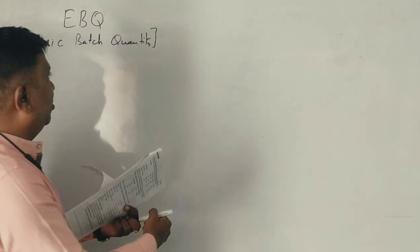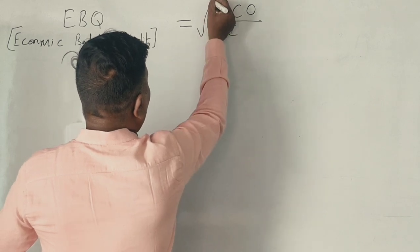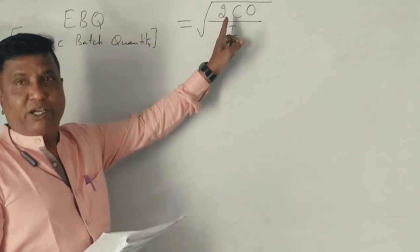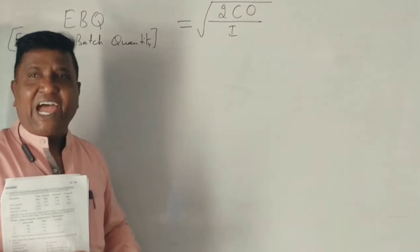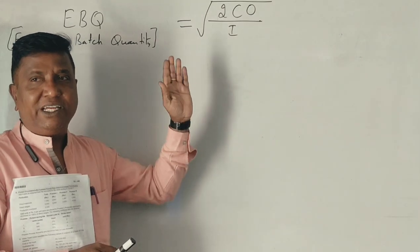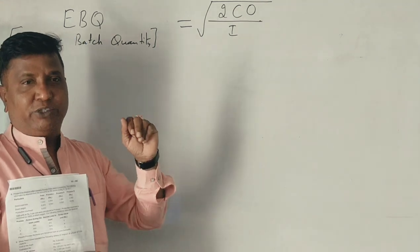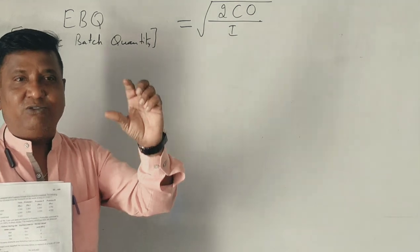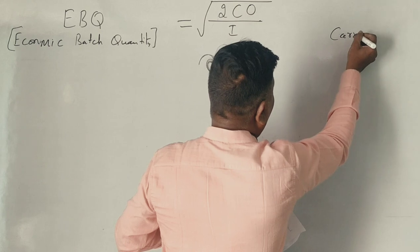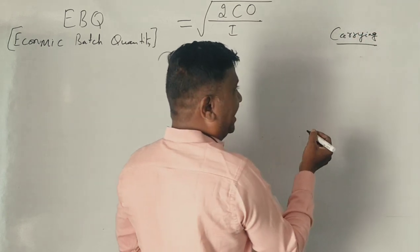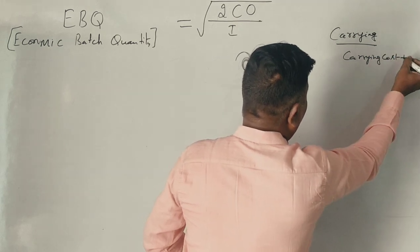The EBQ formula is: EBQ = √(2CO / H), where C is the annual consumption, O is the ordering or setup cost, and H is the carrying cost per unit, which includes the interest rate.